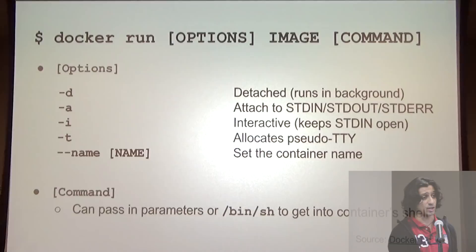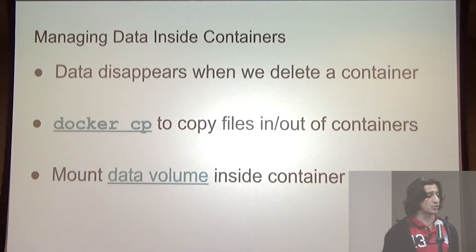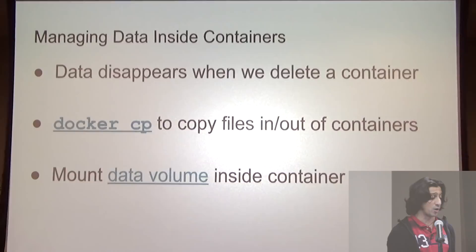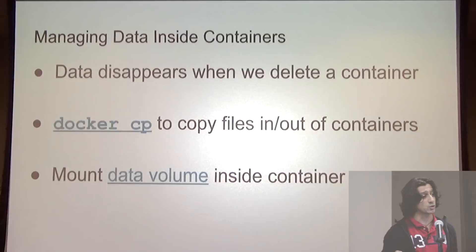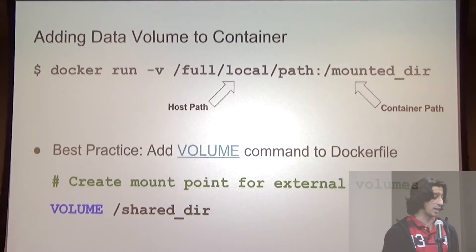Be aware that any time we delete a container, we delete all the data inside it — everything in that top read-write container layer just goes away. The easiest way to manage data is using docker cp to copy files in and out of containers, but that becomes tedious. The more preferred way is to use a data volume — we mount a local folder as a directory inside our container, and any changes made inside the container show up on our local folder since it's only been mounted there. When creating containers with docker run, we specify the local directory and the container path to mount with the -v flag.